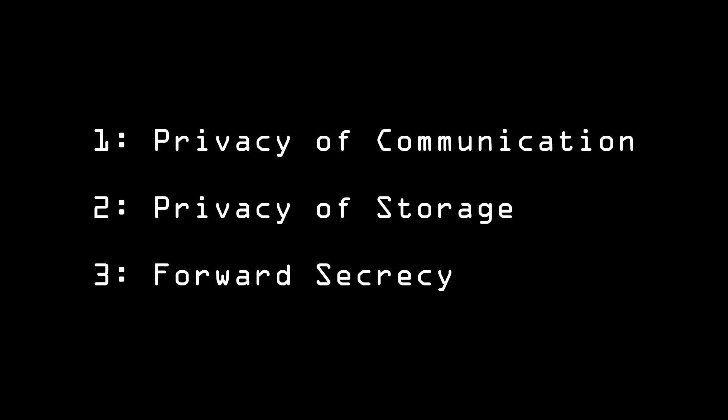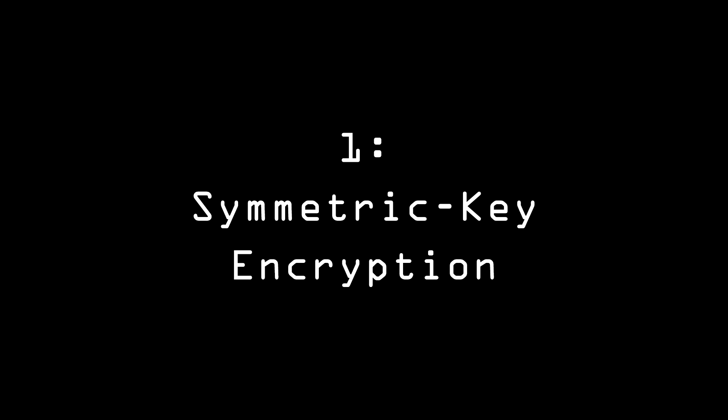So there are different types of encryption, each with their own advantages and disadvantages that try to solve these problems. The first type is Symmetric Key Encryption, also known as Secret Key Encryption, since the key must be kept secret.